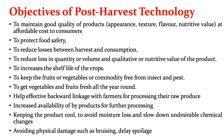Next, keeping the product cool to avoid moisture loss and slow down undesirable chemical changes. Moisture losses can cause shrinkage of fruits and vegetables because of high temperature and low humidity, so to avoid moisture loss, the product should be kept under refrigeration. Then, avoiding physical damage such as bruising to delay spoilage, because impact during transportation and distribution can cause spoilage of fruits and vegetables. Post harvest technology can reduce these losses during transportation.